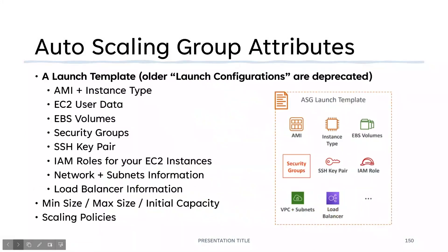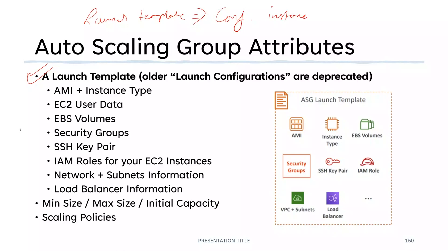Auto Scaling Group attributes — let us see how to create an ASG and what attributes are necessary. A launch template describes what configuration your instances should have. Since EC2 instances will be in your ASG, you specify what configurations you want — for example, T2 micro EC2 instances. The ASG will add and remove T2 micro instances based on that launch template.